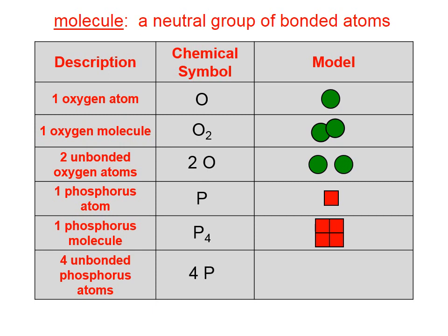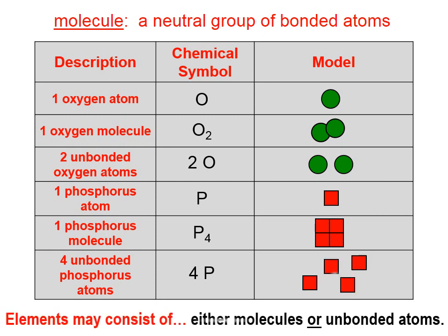To represent four unbonded phosphorus atoms, we might write four in front of the P. You can see that depending on whether we write, if we look here at phosphorus, a subscript, that's referring to those atoms being bonded. If we write a coefficient out front, that simply means that we have to write that many of those atoms. So, elements may consist of either molecules or unbonded atoms.